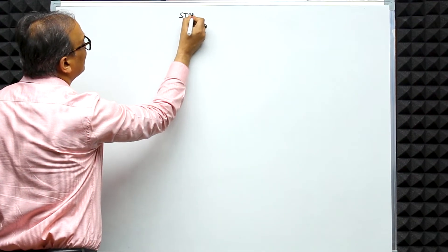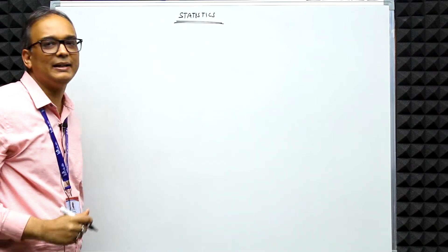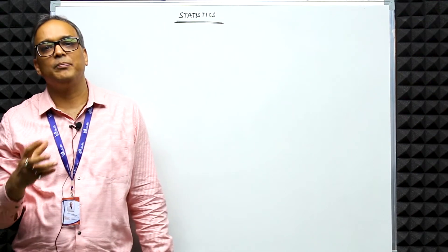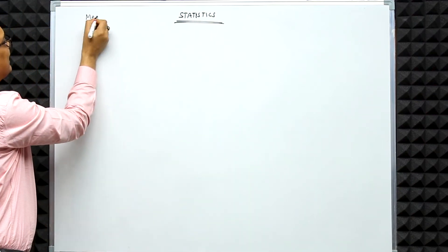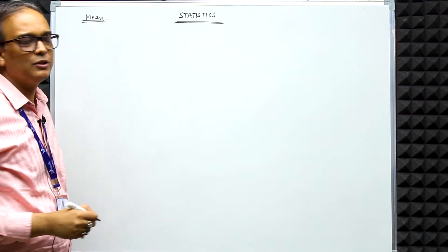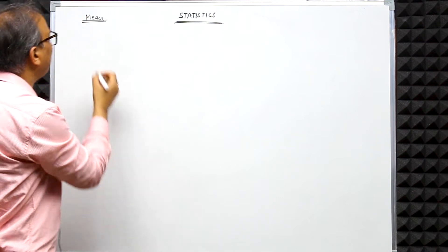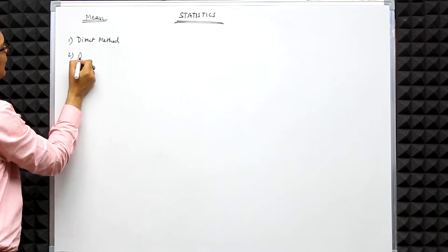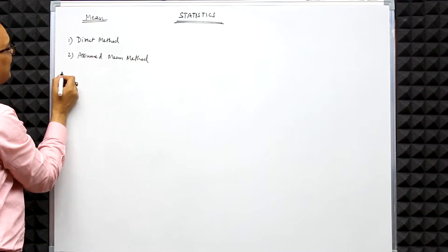So what do we have to learn in Statistics? There are three things: first we have to learn the Mean, second the Median, and third the Mode — and this is basically grouped data. For the Mean, there are three methods: the first method is the Direct Method, the second is the Assumed Mean Method, and the third is the Step Deviation Method.